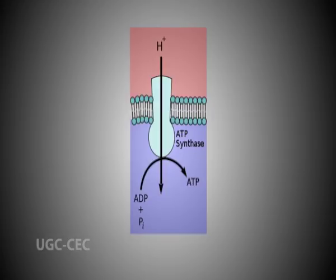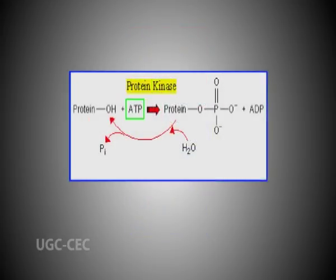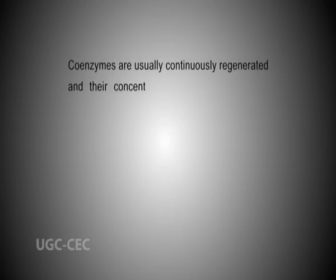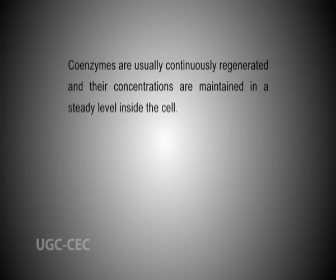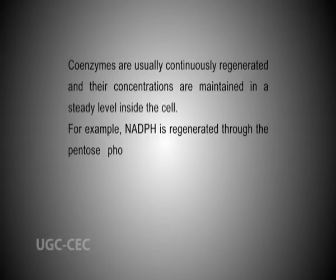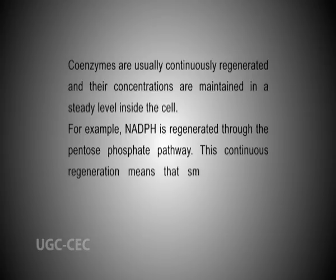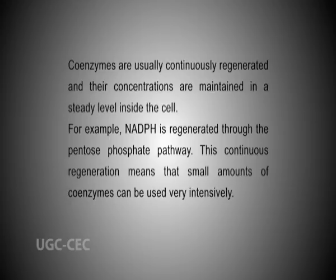In metabolism, coenzymes play important roles such as in group transfer reactions by ATP and coenzyme A, and in oxidation-reduction reactions by NAD+ and coenzyme Q10. Coenzymes are frequently consumed and recycled, during which chemical groups are added and removed continuously by the enzyme. For example, ATP synthase enzyme phosphorylates and converts ADP to ATP, while kinase enzyme dephosphorylates ATP back to ADP. Coenzymes are usually continuously regenerated and their concentrations are maintained at a steady level inside the cell. NAD+ is regenerated through the pentose phosphate pathway, and this continuous regeneration means that small amounts of coenzymes can be used very intensively.